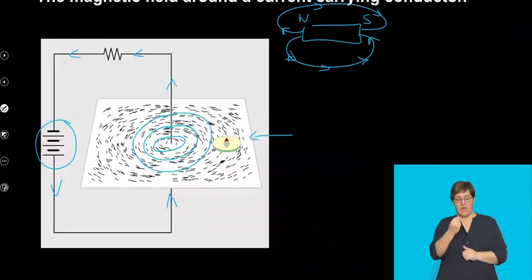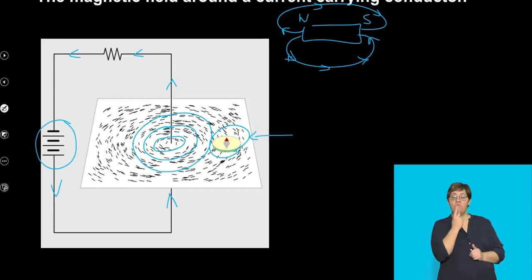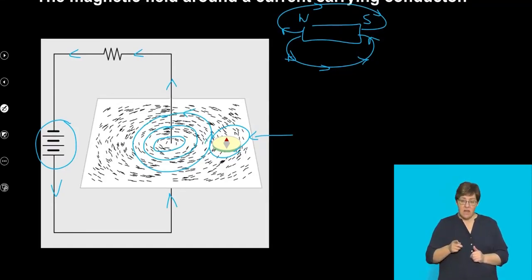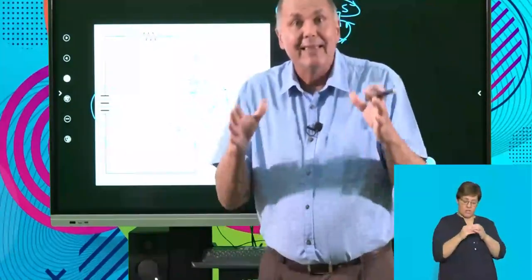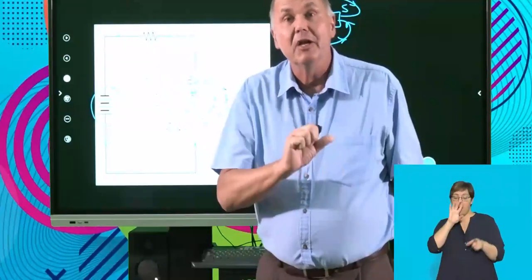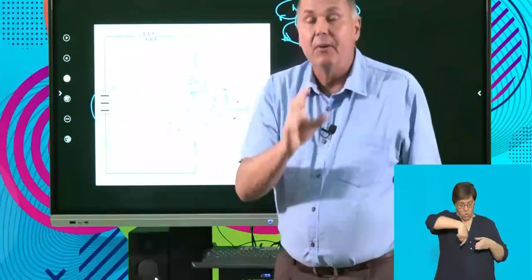Here we have one compass, and the red end is the direction in which the magnetic field is going. As we move it around it makes the circular pattern. The compass shows us the direction of the magnetic field. It's very important that we can determine and predict in which direction a magnetic field will be associated with a current passing through a conductor.